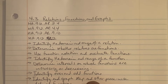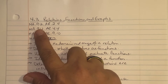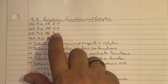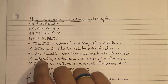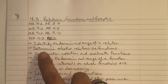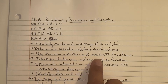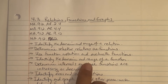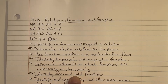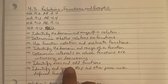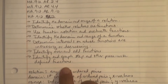4.3 Relations, Functions, and Graphs. We're using standards MA.912.AR.2.4, 4.4, 9.10, and F.1.2. We're going to identify the domain and range of a relation, determine whether relations are functions, use function notation and evaluate functions, identify the domain and range of a function, determine intervals on which functions are increasing or decreasing, identify even and odd functions, and identify and graph step and other piecewise defined functions.